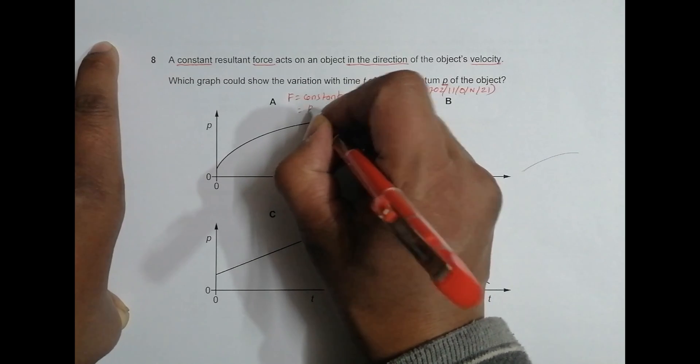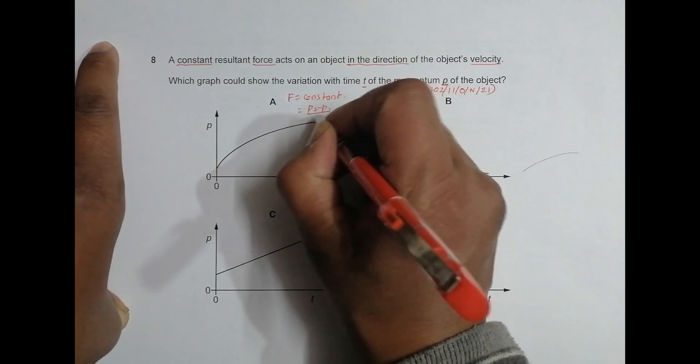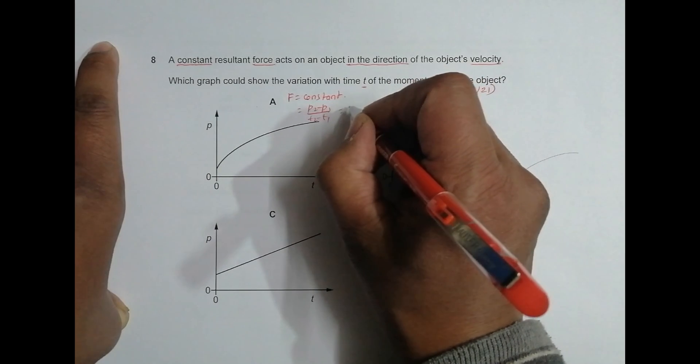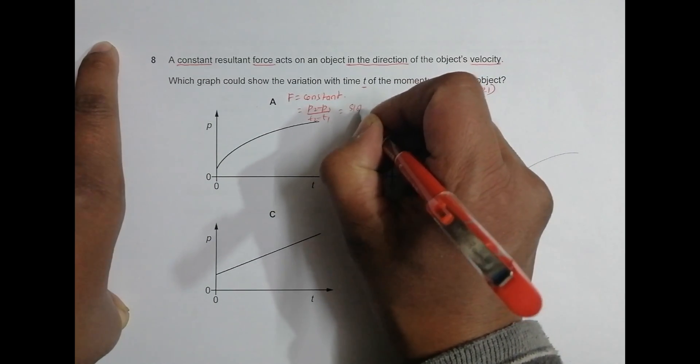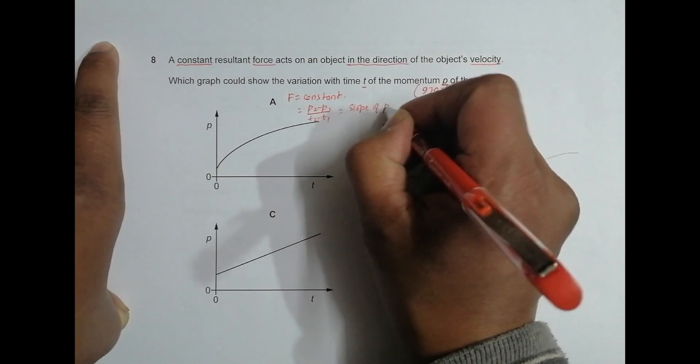F is equal to p2 minus p1 by t2 minus t1. That's equal to slope of p and t graph, the p-t graph.